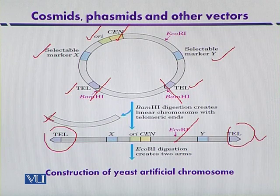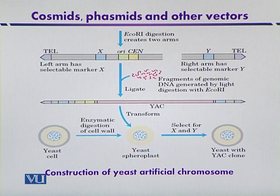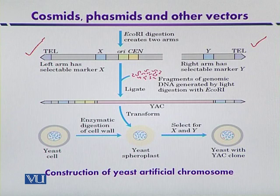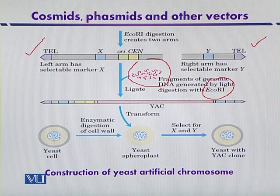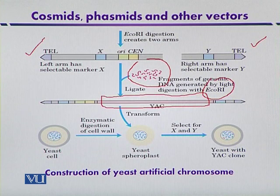After the left and right arms get separated, larger fragments of foreign DNA that have been digested with EcoRI — comparatively larger in size — are mixed together with the arms. The foreign DNA, which is comparatively larger DNA fragments, is inserted. When the recombinant yeast artificial chromosome is produced, it can be used to infect the yeast cell.